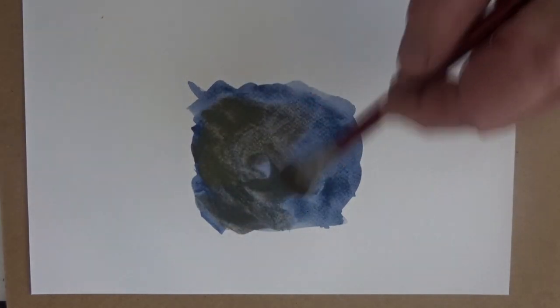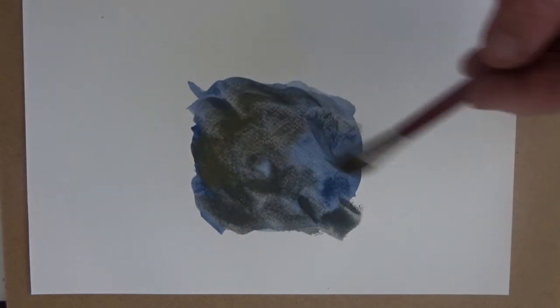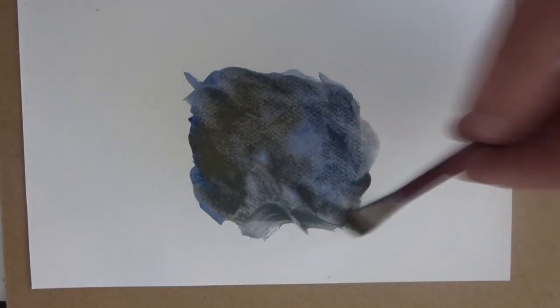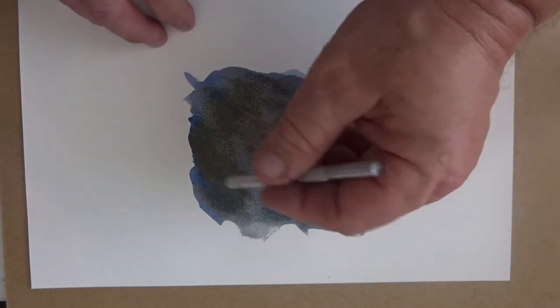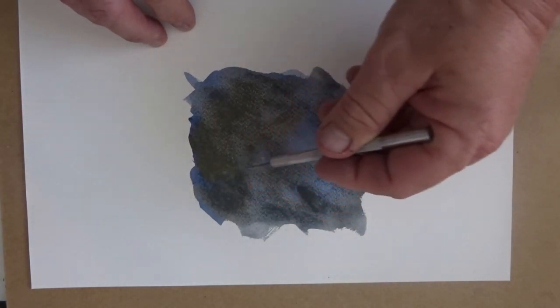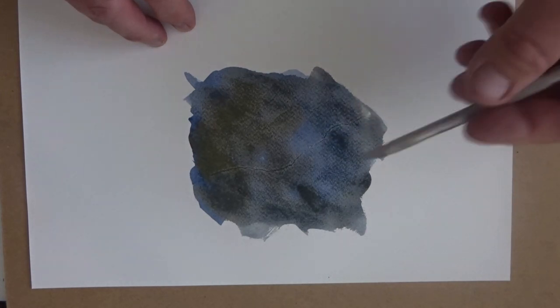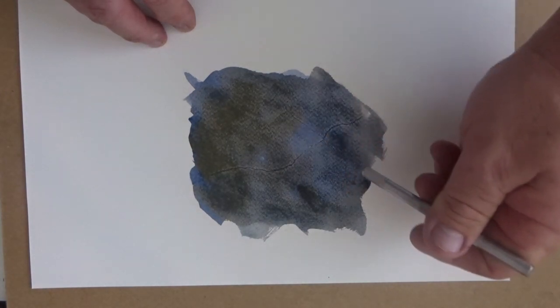Now while it's still wet, I'm going to scratch through it. You can use your exacto knife. You don't cut through the paper, you don't have to do much more than drag it, but you're going to see it immediately starts making lines and grooves.